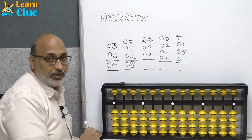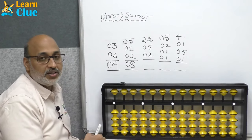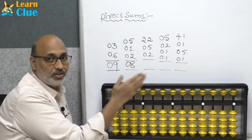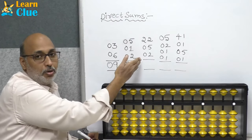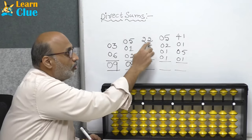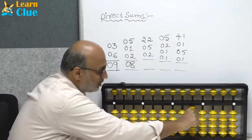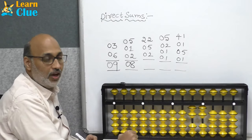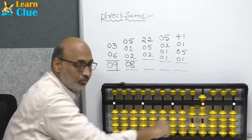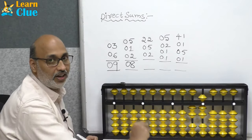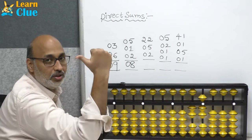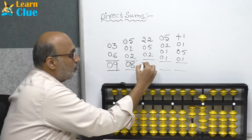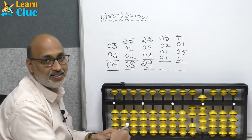Next problem: 22. Here we have a tens place and ones place. Always place the higher denomination first. In tens place the value is 20; in ones place the value is 2 — together that's 22. Now they are asking to add 5 with your index finger, then plus 2 with your thumb finger. What is the answer? 29 is the answer.